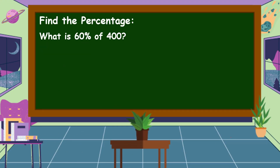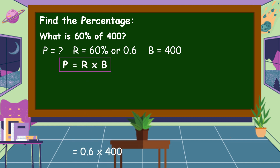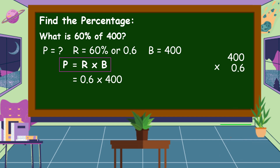Another example: What is 60% of 400? Percentage is unknown. Rate is 60% or 6 tenths, and the base is 400. So, we're going to substitute the value of rate and base into our formula: 6 tenths times 400. 6 times 0 is equal to 0. 6 times 0 is equal to 0. 6 times 4 is equal to 24. Then we're going to count the decimal places in our factors — we only have one decimal place — then we're going to omit one zero in our product. Therefore, the percentage is equal to 240.